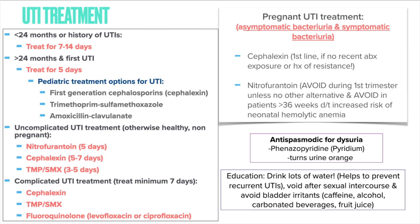For pregnant UTI treatment, remember the acronym CAMP Safe in Pregnancy: cephalexin, amoxicillin or amoxicillin with clavulanate, metronidazole, or penicillins. Cephalexin is first-line for pregnant patients with no recent antibiotic exposure or resistance history. Nitrofurantoin is an option but should be avoided in the first trimester unless no alternative exists, and absolutely avoided after 36 weeks due to increased risk of neonatal hemolytic anemia.